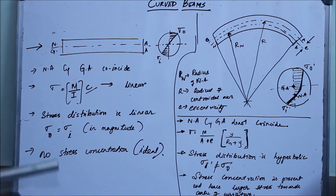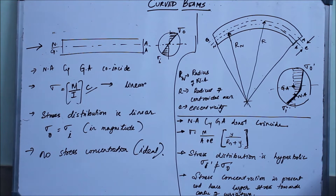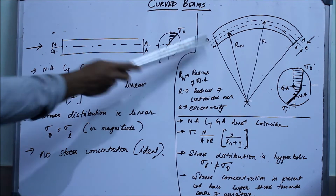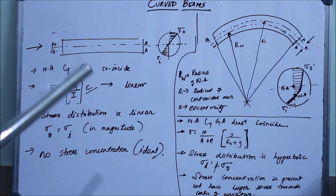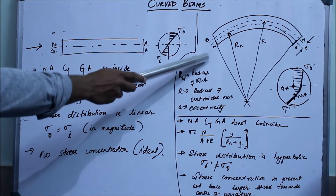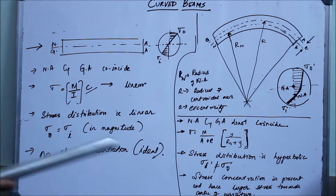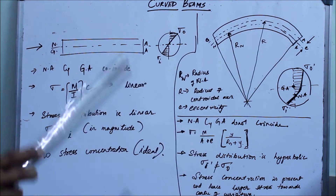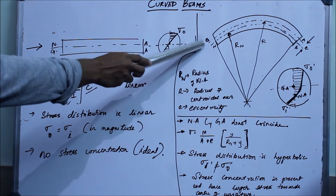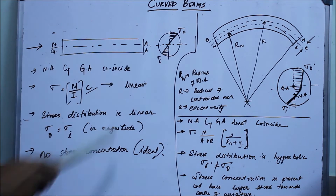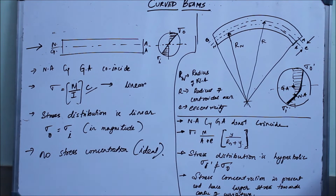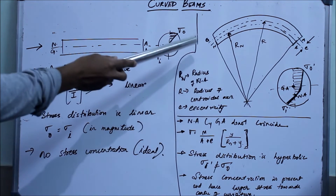Now coming to curved beams, which is our main topic. In curved beams, the geometrical axis and the neutral axis do not coincide. The neutral axis is generally shifted towards the radius of curvature — it lies below the geometrical axis, closer to the center of curvature. Here, R_n is the radius of curvature of the neutral axis, R is the radius of the geometrical axis, and e is the eccentricity — the radial difference between the two radii.